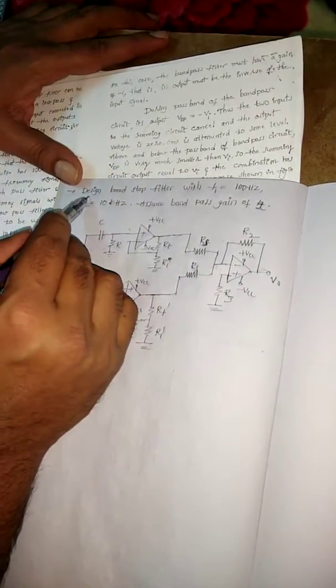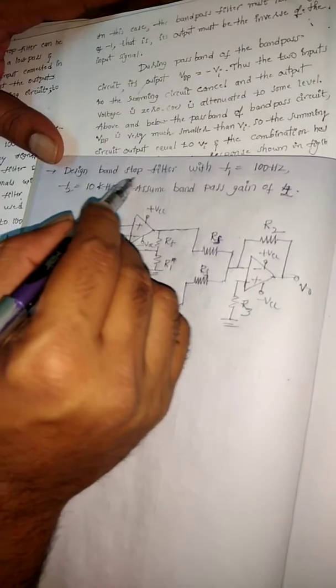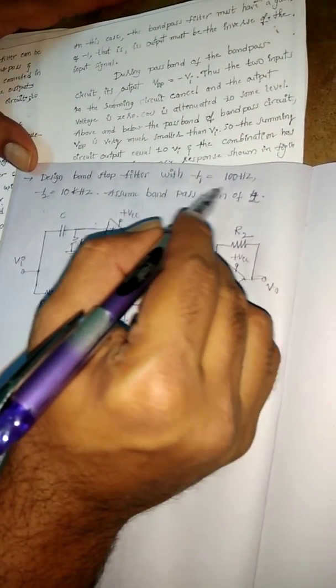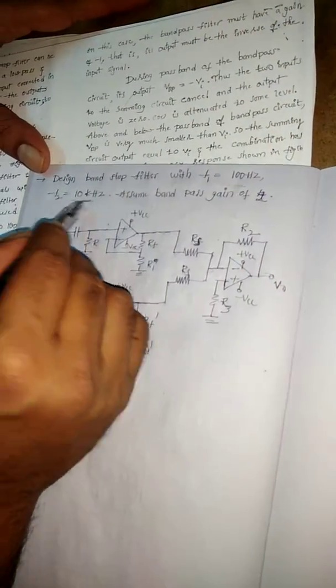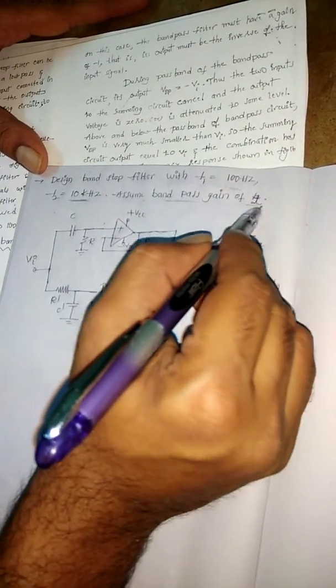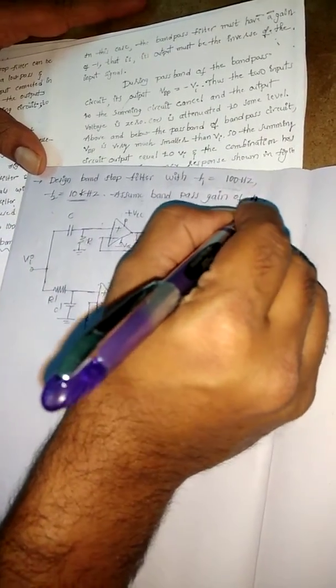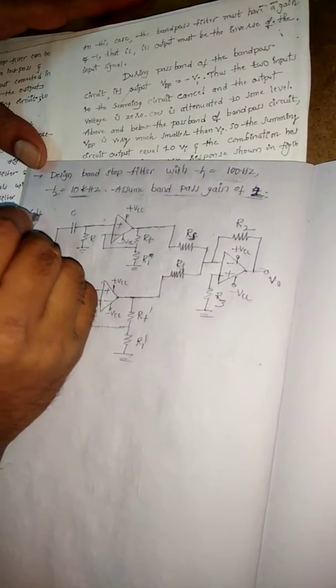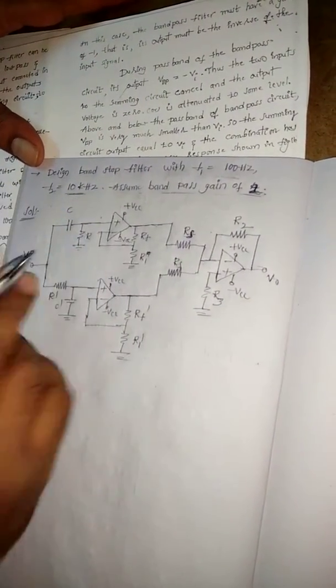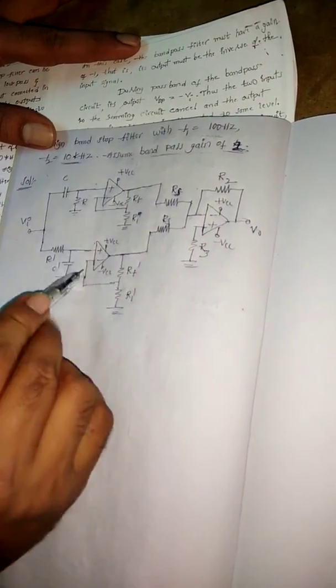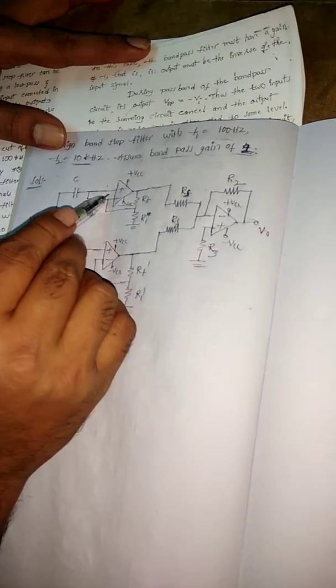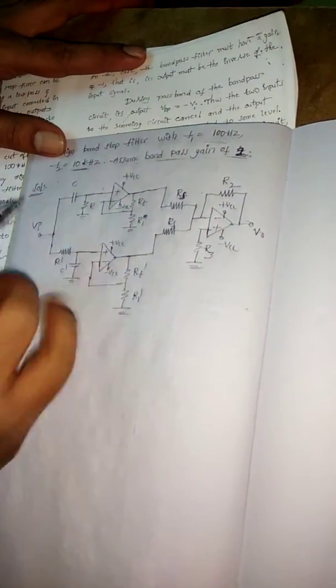The given question is to design a band-stop filter with two given cutoff frequencies, and an assumed pass band gain of two. First, we draw the circuit to understand what we need to find. A band-pass filter means a parallel combination of high-pass and low-pass filters. Here I'm drawing the high-pass and low-pass filters, which need to be connected in parallel.